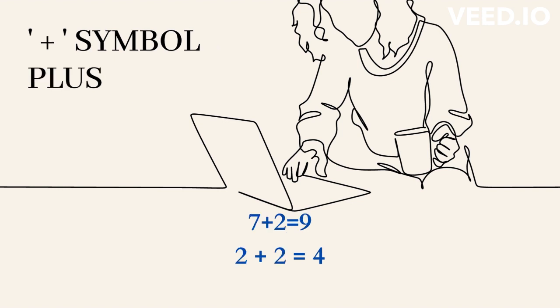This symbol is called plus, for example, 7 plus 2 is 9. You can also say the same calculation in a different way by using the verb add, for example, add 7 to 2.